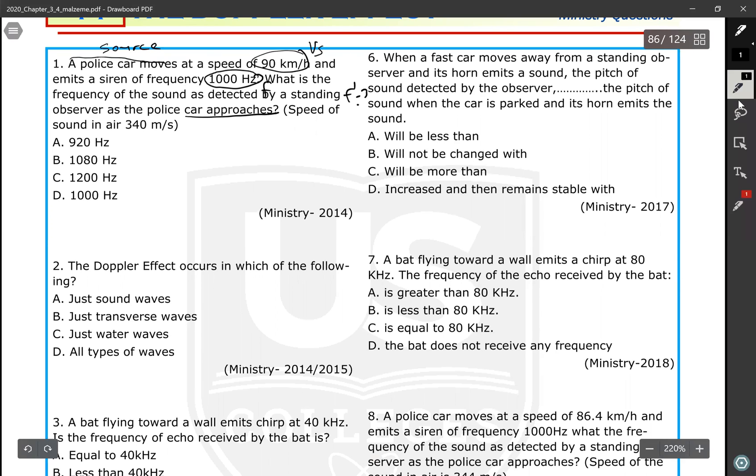As the police car approaches - if the source and the observer are approaching each other, the pitch increases. That's why f prime will be greater than f. We know the equation for f prime is f multiplied by v, speed of the sound, plus minus v_o, divided by v plus minus v_s. Because the observer is at rest - standing observer means v_o is zero. So you don't need to worry about that part. In the numerator we have just v, speed of sound only.